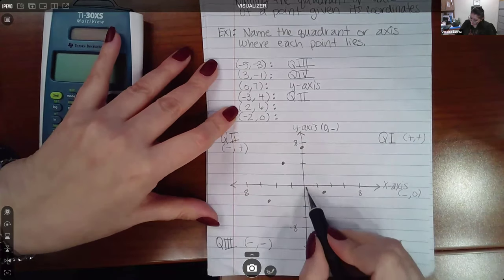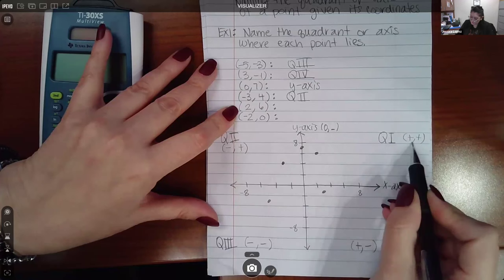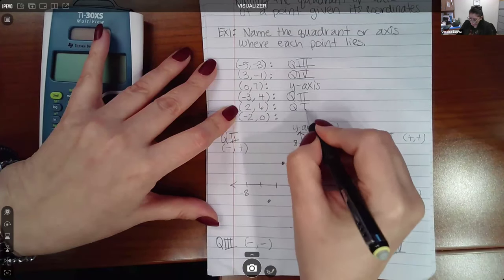And then now a positive two and a positive six is here, which again positive coordinates means you will be in quadrant one.